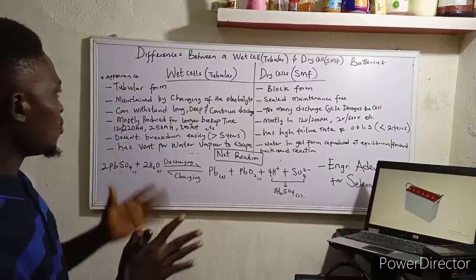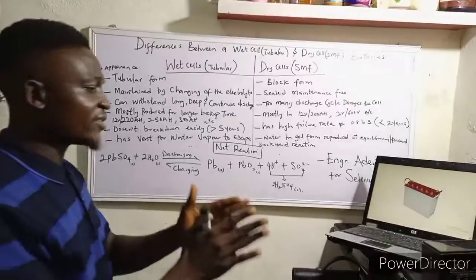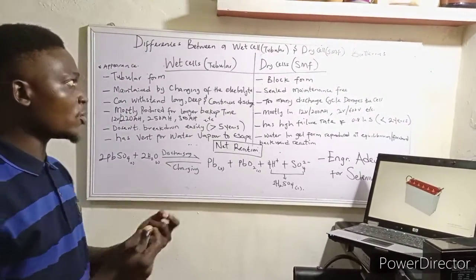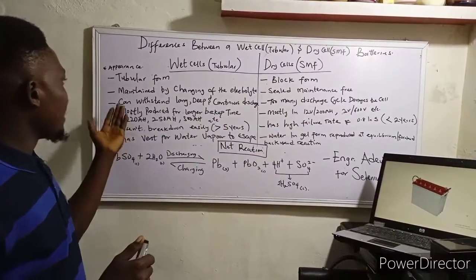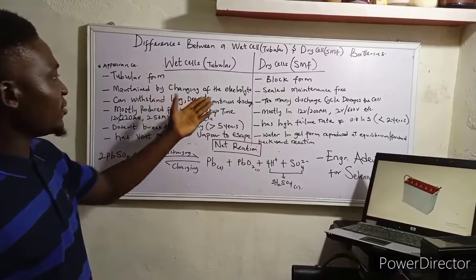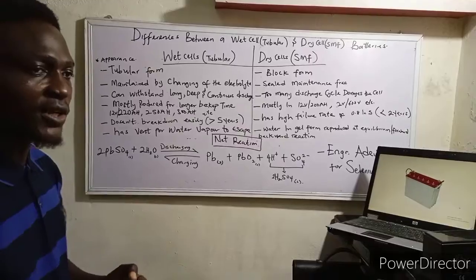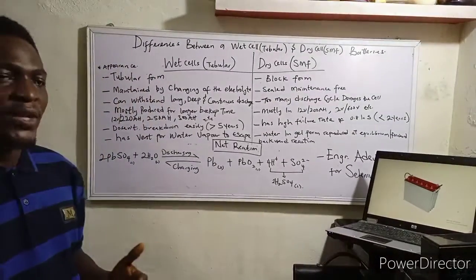Wet cell batteries are mostly in tubular form, while dry cell batteries are in block form. They are also called sealed maintenance-free. Wet cell is maintained by changing of the electrolyte.